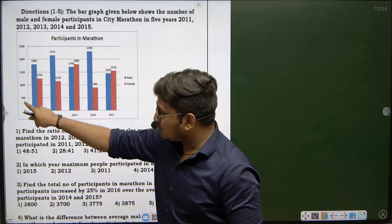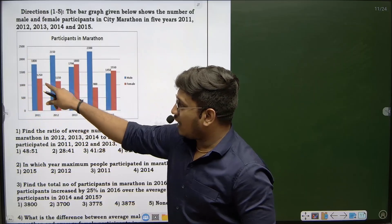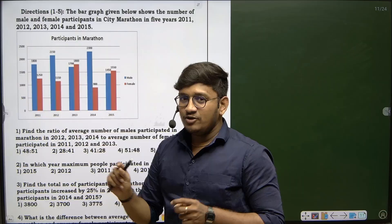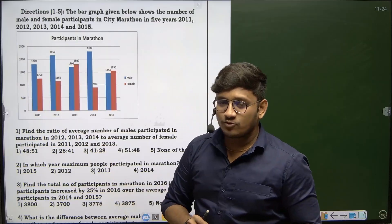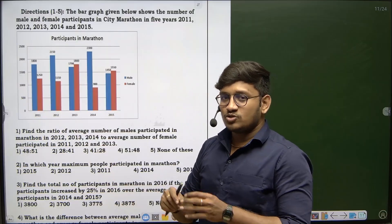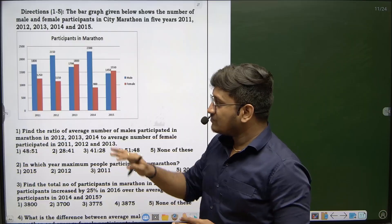Here we have 0, 500, 1000 on the y-axis. If you have values in between, you can take an approximate value to solve the questions, since you will get approximate values in the options.